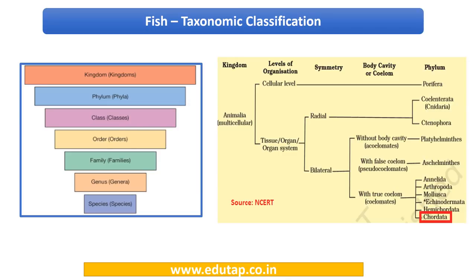Now let us look at the taxonomy classification of fish. When we say fish here, we are referring to those fishes that bear fins — just keep this point in mind. When we talk about the taxonomic classification, the hierarchy goes: kingdom, phylum, class, order, family, genus, and species.